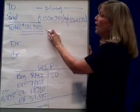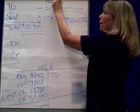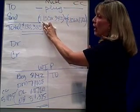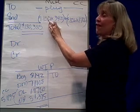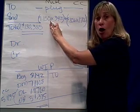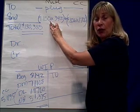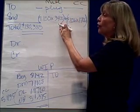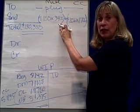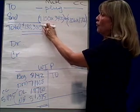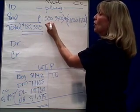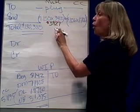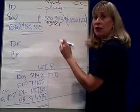In step 4, we found that for materials we have a $1.155 cost per equivalent unit. Going up to step 2, we find that there were 3,400 equivalent units for materials. So multiplying those two together, we're going to assign $3,927 of cost to ending inventory.